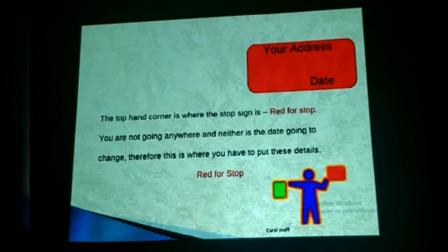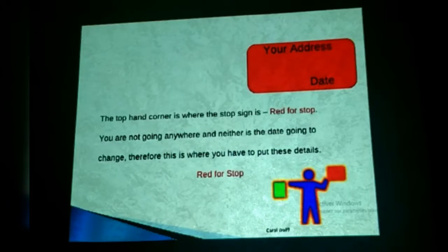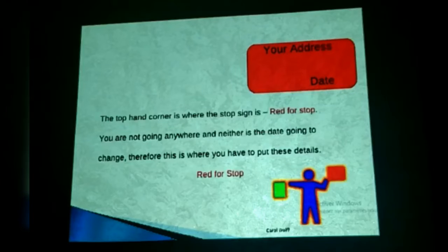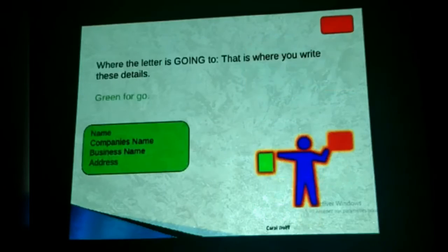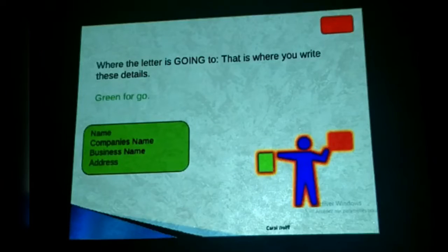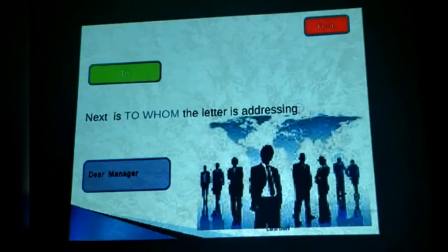To remember the format, think about a traffic officer directing traffic. At the top right is your address and date — that's where the red stop sign is. You are not going anywhere, and neither is the date going to change. The green light indicates where the letter is going: the recipient's name, company name, business name, and address. Then comes the salutation: Dear Manager, Dear Secretary General.